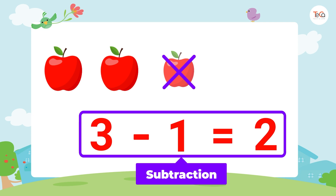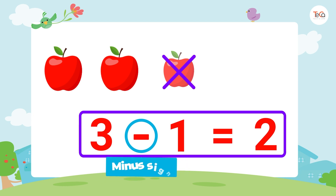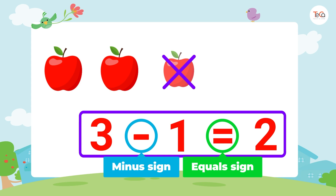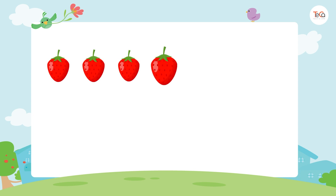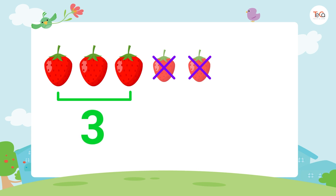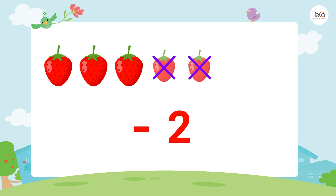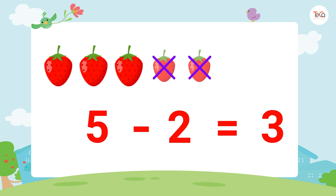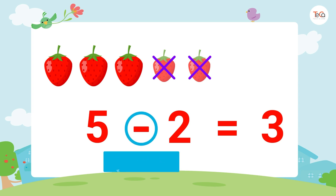Notice here, this is the minus sign and this is the equal sign. Let's take another example. You have five strawberries. They look juicy, so you give your dad two strawberries. Now you have three strawberries left. Here we subtract two from five to get three. We say five minus two equals three.